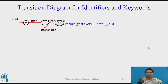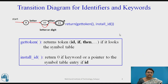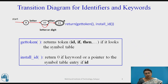Another transition diagram is for identifiers and keywords. It reads a letter and then a combination of letters or digits. It returns two things: one is a token, and the other is an entry to that particular identifier. The get_token function returns a token as 'id' if it is an identifier, or the keyword itself if it is a keyword. The install_id function returns zero if it is a keyword, or a pointer to the symbol table entry for a particular identifier.